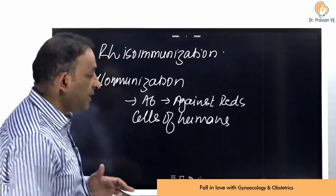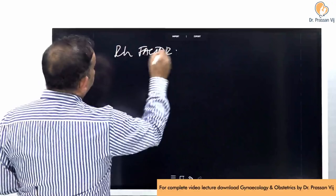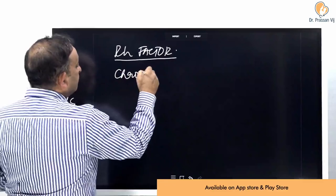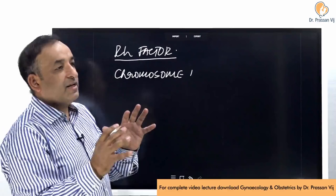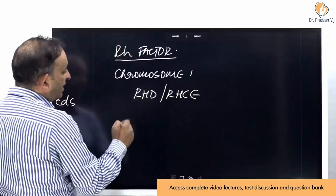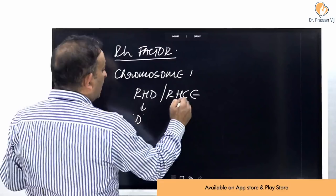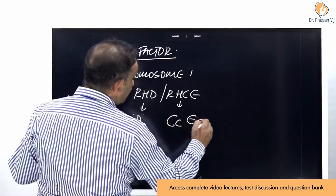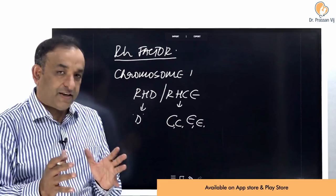Let us look at the RH antigen and its location. The RH factor has representation on chromosome 1. This chromosome 1 has not just the D antigen as part of the RH factor — in fact, there are two sets of locations: the RHD locus and the RHCE locus. The RHD locus codes for the D antigen, also known as the RH antigen, and the RHCE locus codes for the C, small c, E, and small e antigens. In total, five antigens constitute the RH factor.